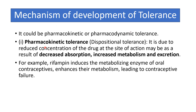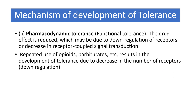Mechanisms of tolerance: pharmacokinetic tolerance is due to reduced drug concentration at the site of action — caused by decreased absorption, increased metabolism, or increased excretion. Example: rifampicin induces metabolizing enzymes for oral contraceptives, enhancing their metabolism and leading to contraceptive failure. Pharmacodynamic tolerance: drug effect is reduced due to down-regulation of receptors or decreased receptor-coupled signal transduction — for example, repeated use of opioids or barbiturates.